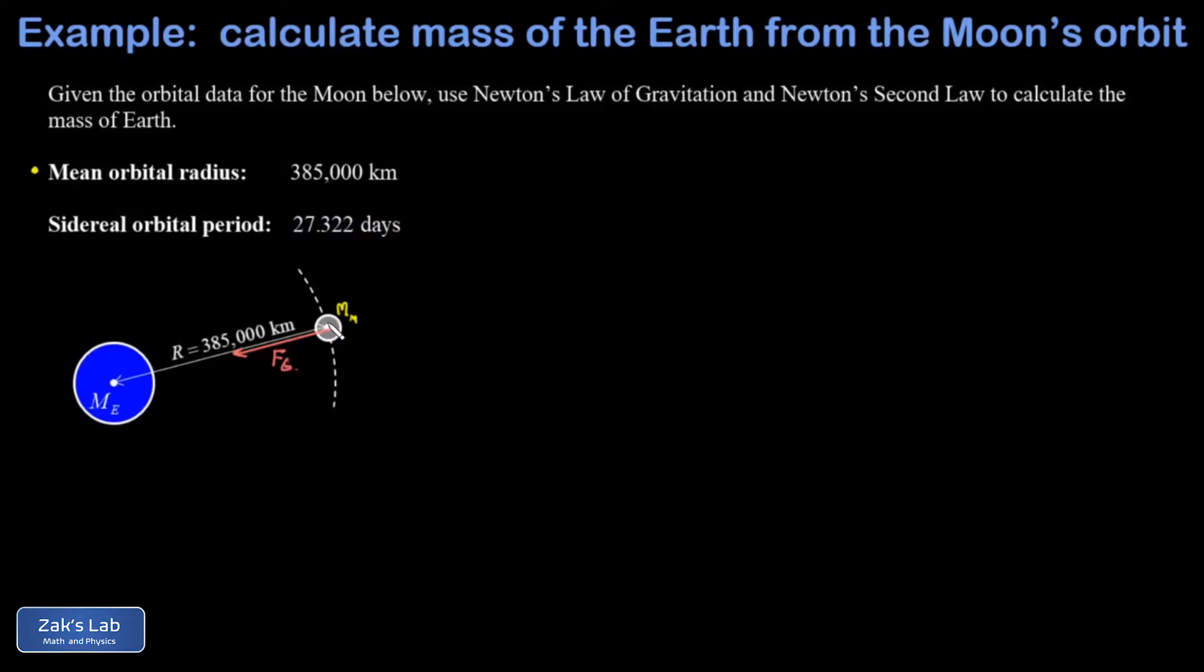And that force arises from the attractive force of gravitation. The force of gravitation is described by Newton's law of gravitation: that's G times the product of both masses that are involved divided by the square of the separation distance between them. And that constant G is given by about 6.67 × 10⁻¹¹ newton meters squared per kilogram squared.